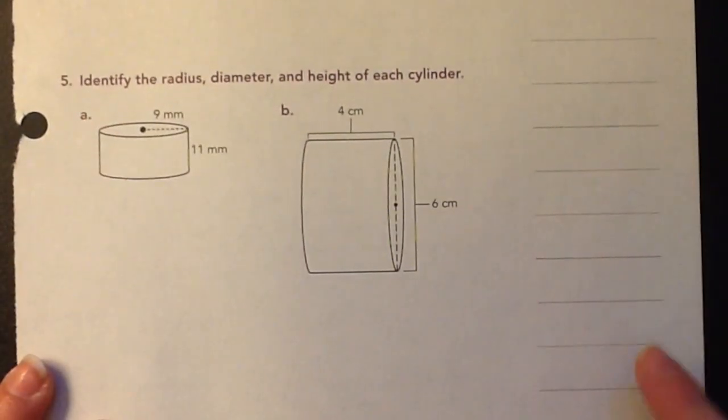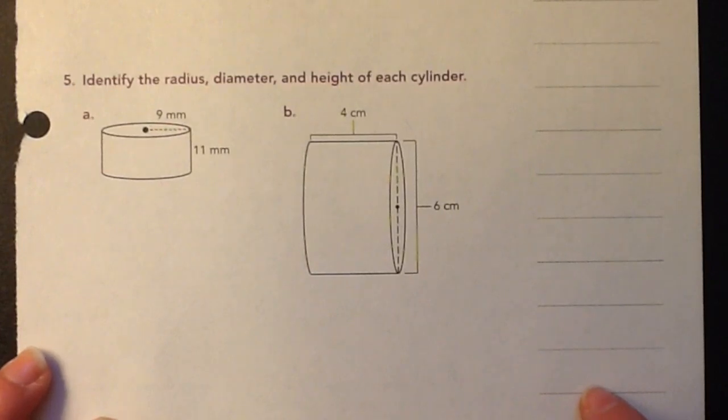So on five, it says identify the radius, diameter, and the height of each cylinder, just getting used to what these dimensions are.